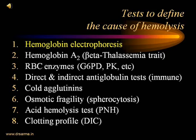In many cases of hemolytic anemia, more advanced tests are required. Hemoglobin electrophoresis is the most important test — hemoglobin A2 is seen in beta thalassemia. RBC enzymes like G6PD and pyruvate kinase are estimated to find some causes. Direct and indirect anti-globulin tests (previously called Coombs tests) will tell us about immune-mediated hemolytic anemias. Cold agglutinins, osmotic fragility test (useful in spherocytosis), acid hemolysis test (useful in paroxysmal nocturnal hemoglobinuria or PNH), and clotting profile in DIC are also utilized.